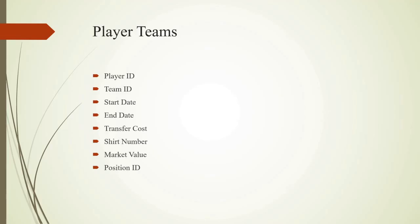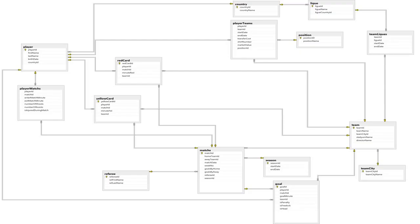Player Teams Entity contains player information in a team by storing various data about the player while the player is in that team. Teams require information from this entity for each player, and players can be transferred more than once. So, Player Teams Entity has one domain relation with both Team Entity and Player Entity.